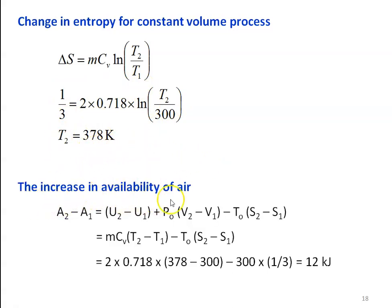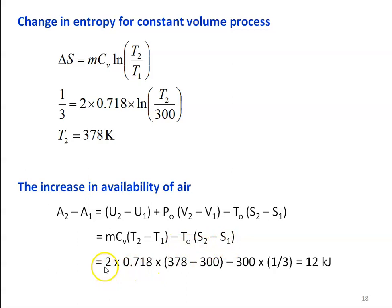Increase in availability: A2 − A1 = M·Cv·(T2 − T1) − T0·(S2 − S1). Since V2 = V1, the pressure-volume term drops. Substituting: 2×0.718×(378−300) − 300×(1/3) = increase in availability = 12 kJ.